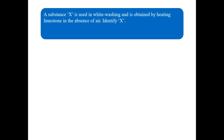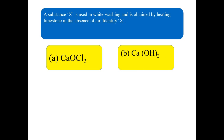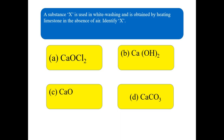Next question: a substance X is used in whitewashing and is obtained by heating limestone in the absence of air. Identify substance X. Options include calcium hydroxide Ca(OH)2, calcium oxide CaO, calcium carbonate CaCO3, and CO2. Write down the right option for this particular question.